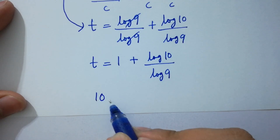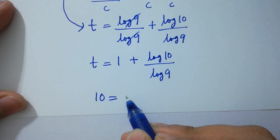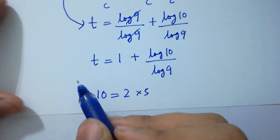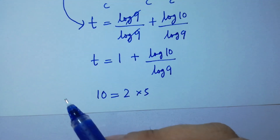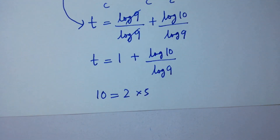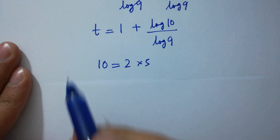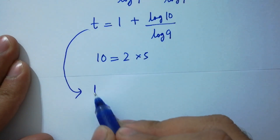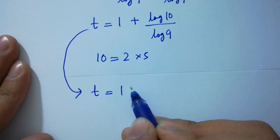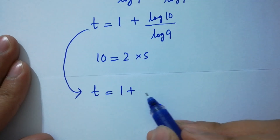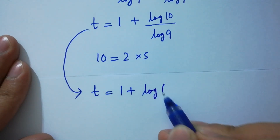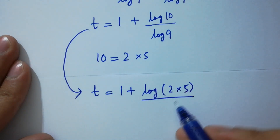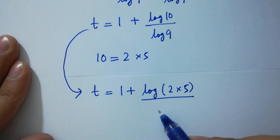Since 10 equals 2 times 5, then t equals 1 plus log(2 times 5) over log 9.